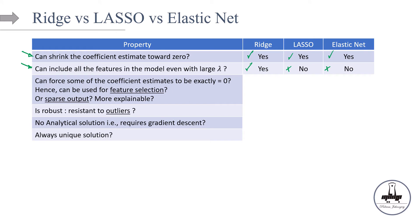Now the next question, this is a really important one. This model can force some of the coefficient estimates to be exactly equal to zero. And for that reason, it can be used for feature selection. This is a really interesting property of the model. Or sparse output or more explainable. By sparse output, we mean that the model is less complex, it's simpler. And so if it is simpler, it is going to be more explainable as well. So what do you think? Can we do it with ridge? No. How about lasso? Yes. How about elastic net? Yes.